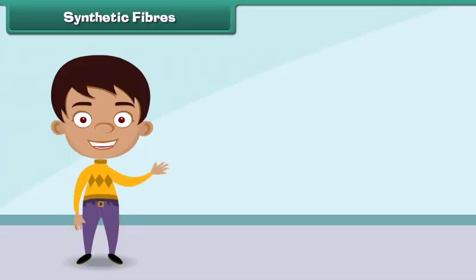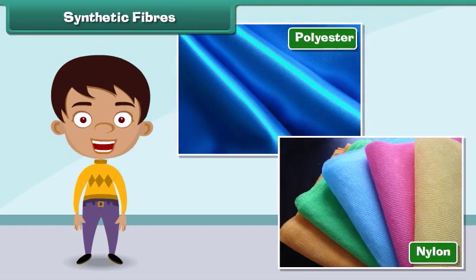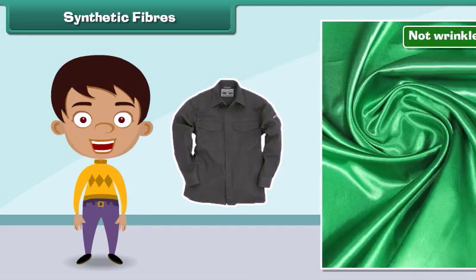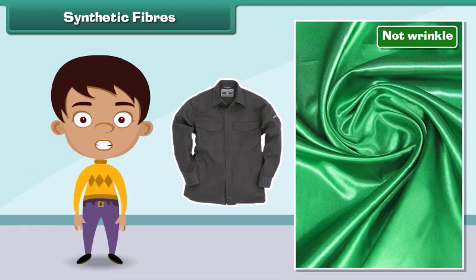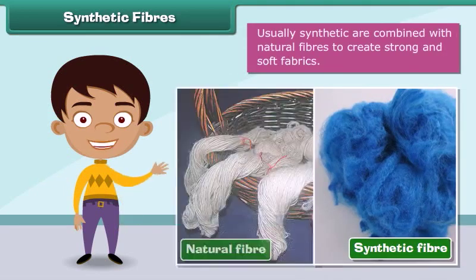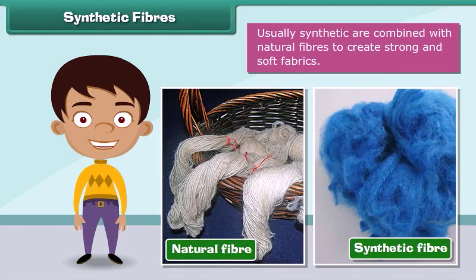Synthetic fibers are man-made. Nylon and polyester are examples of synthetic fibers. Fabric made from synthetic fibers is cheap, dries easily, and does not wrinkle. Usually, synthetic fibers are combined with natural fibers to create strong and soft fabrics.